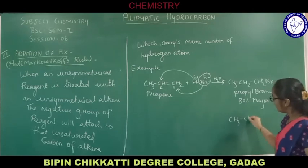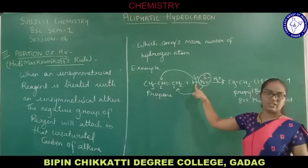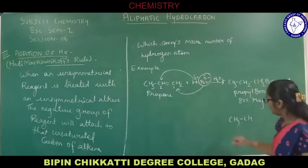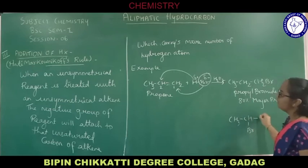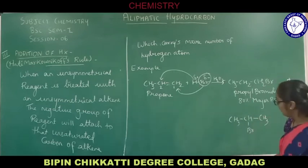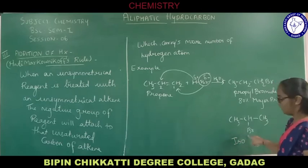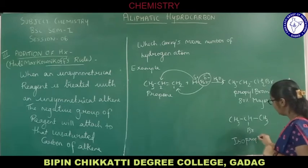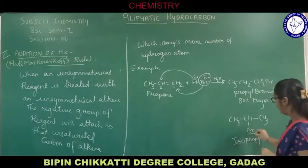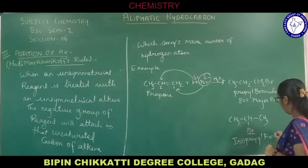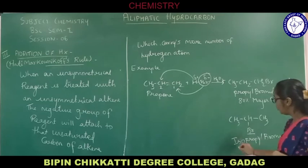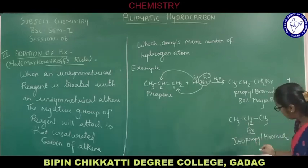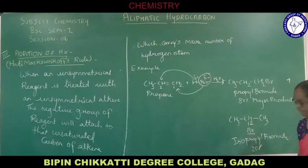In the minor product: in the anti-Markovnikov major product, hydrogen was going to carbon number two. So in the minor product, Br will come to carbon number two instead, and the product becomes CH₃-CHBr-CH₃. The name of this is isopropyl bromide (common name) or 2-bromopropane (IUPAC name), which is the minor product at 20%.